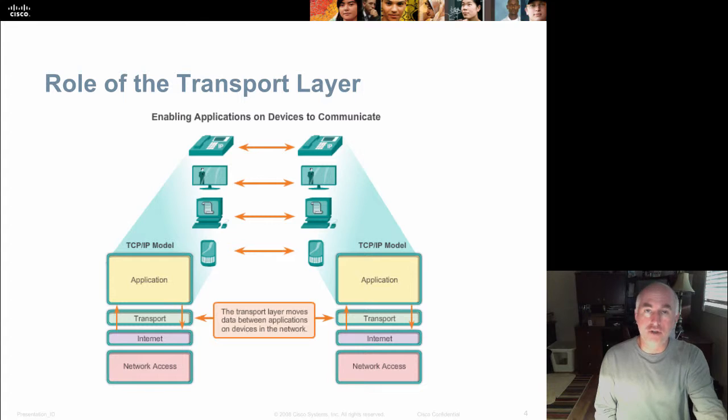Data comes down from layer 7 to 6 to 5, and it's a stream of data intact, maybe an email, a web page, a file transfer. And then it's at layer 4, the transport layer, where it is segmented into shippable pieces. Each piece is labeled with a source port and a destination port. They essentially identify what application it's coming from and what application it's going to.